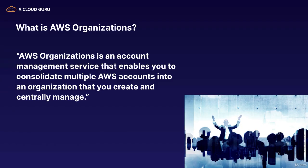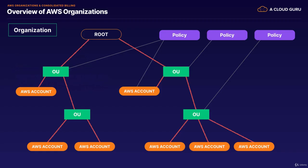So what is AWS Organizations? It's an account management service that enables you to consolidate multiple AWS accounts into an organization that you create and centrally manage. So we've got our organization — this could be the company that you work for. Then we have our root AWS account. This is our master account, and best practice is we use this for billing only. We don't deploy any resources in there.